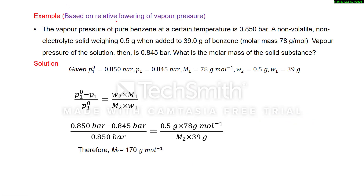The first numerical is based on relative lowering of vapor pressure. The vapor pressure of pure benzene at a certain temperature is given. A non-volatile non-electrolyte solid weighing 0.5 gram is added to 39 gram of benzene. The molar mass of benzene is 78 gram per mole. The vapor pressure of the solution is 0.845 bar. We need to find the molar mass of the solid substance. First, identify what is given in the question.